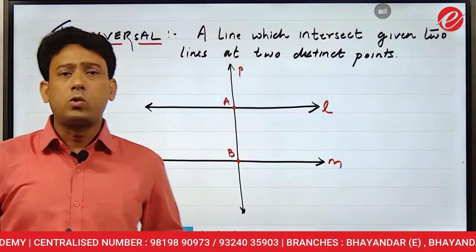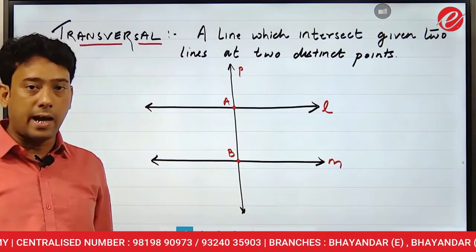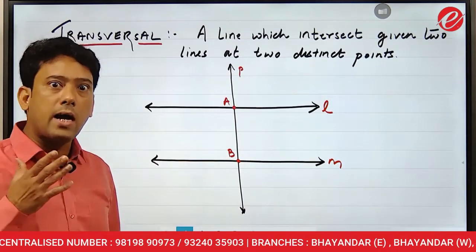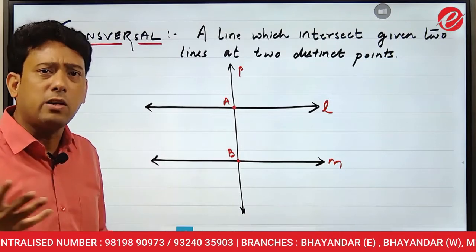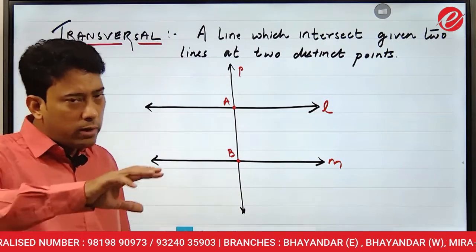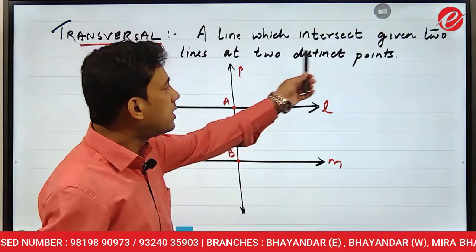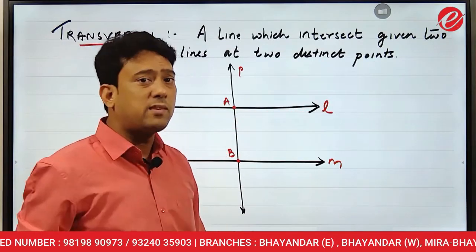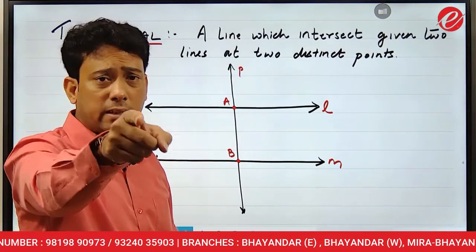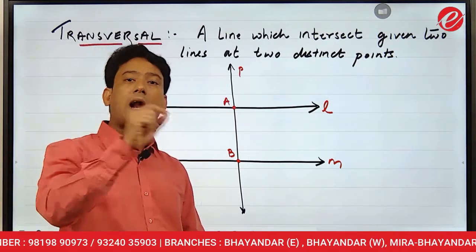Let's understand it well. Ready? So what is a transversal? Transversal is a line — what does this line do? It intersects. It cuts through. It intersects any two given lines. At two distinct points — when that line intersects two given lines at two distinct points, the line that intersects is called a transversal.